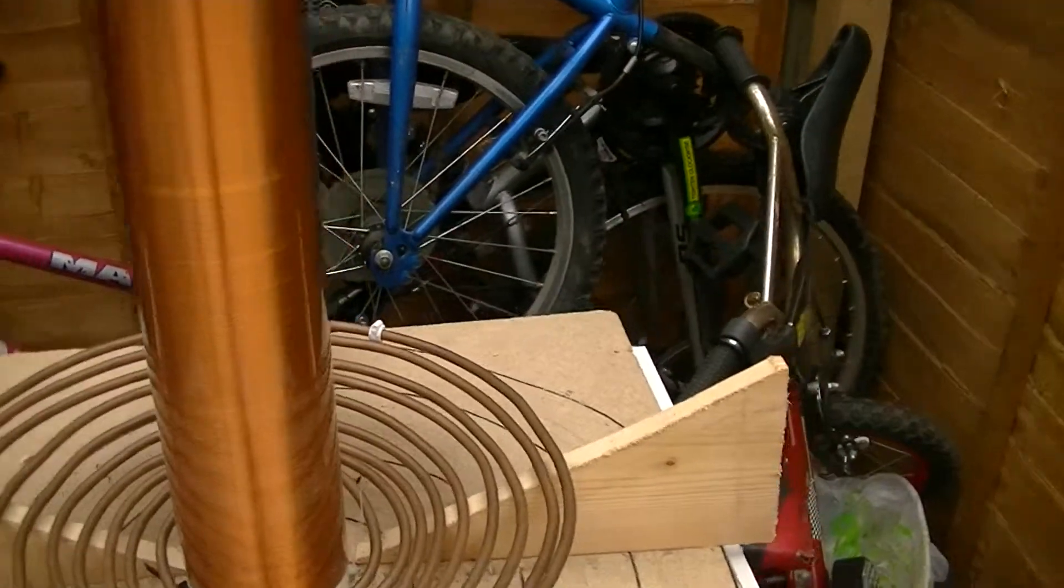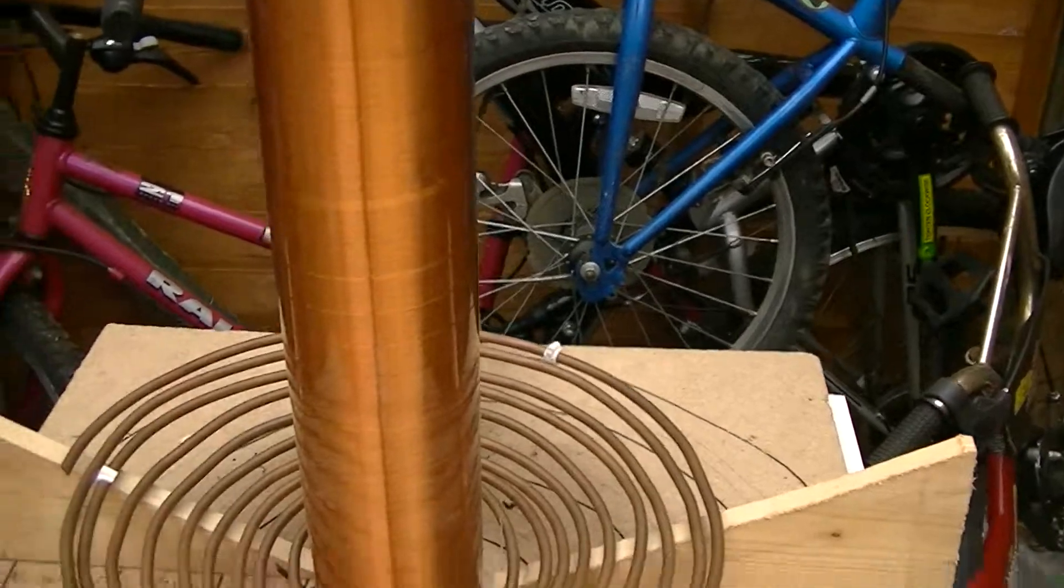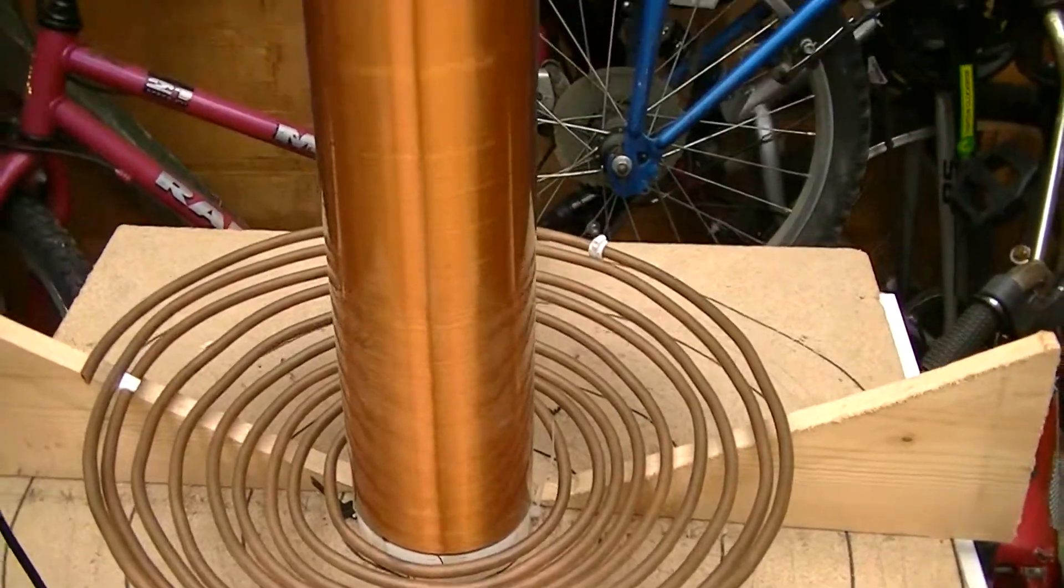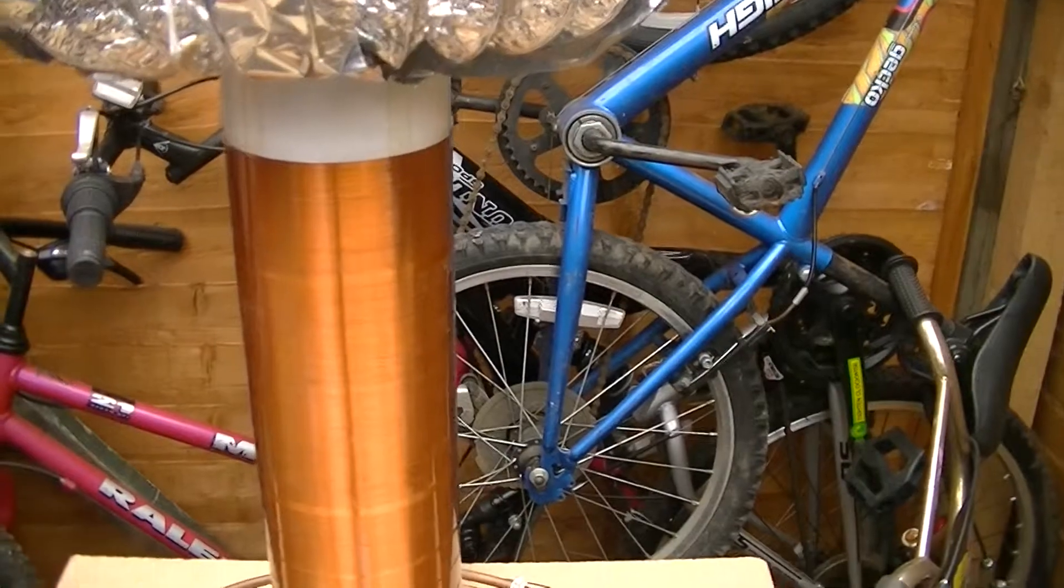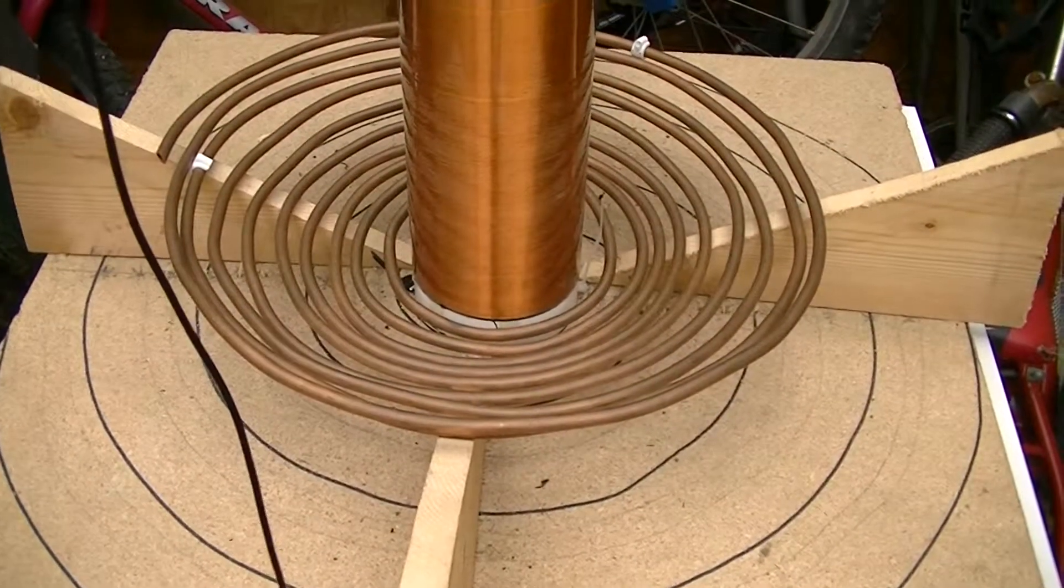So for my Tesla coil, the secondary coil frequency is exactly 253 kilohertz. Now that I know this, it's much easier. I can set up the primary coil, but that's going to be a second part.